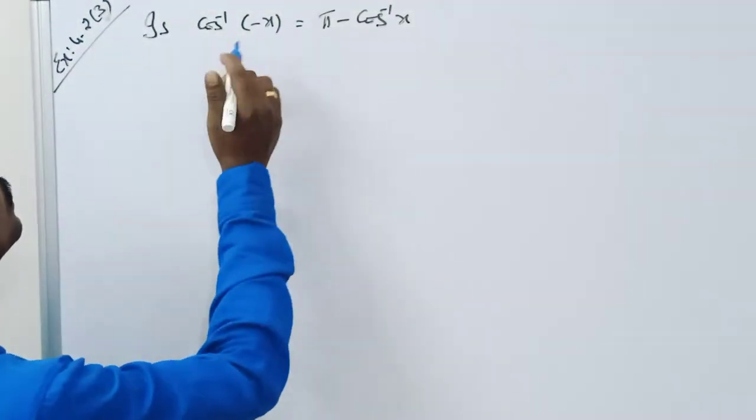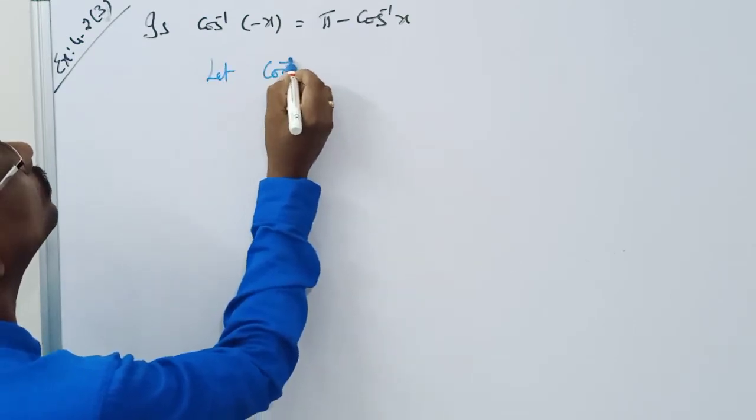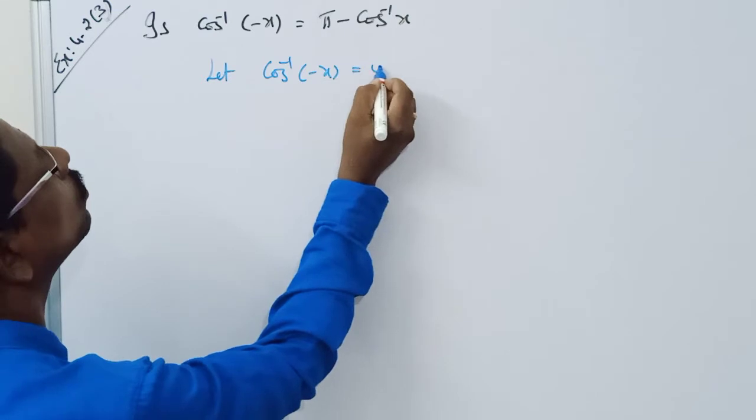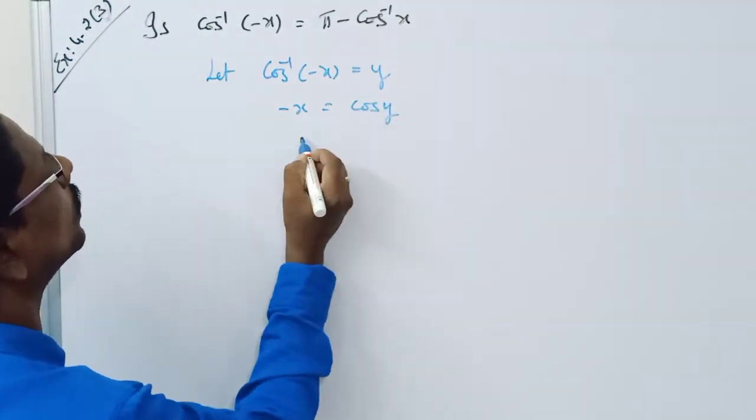So you take, let y equal to, let cos inverse of minus x equal to y. So minus x is equal to cos y.